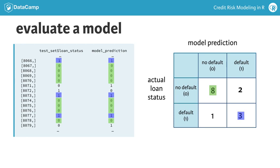However, we see that two non-defaulters were wrongly classified as defaulters, and one defaulter was wrongly classified as a non-defaulter. The items on the diagonals are also called the true positives and true negatives. The off-diagonals are called the false positives versus false negatives.